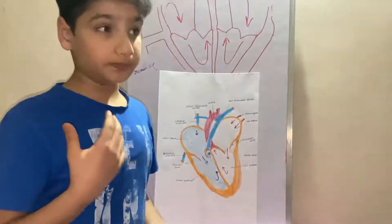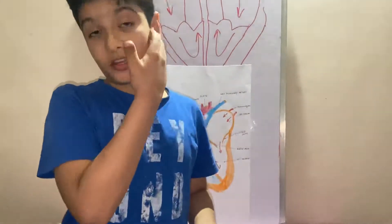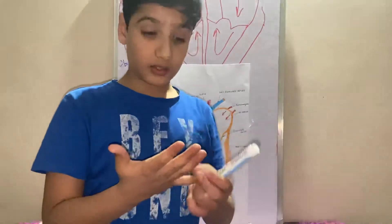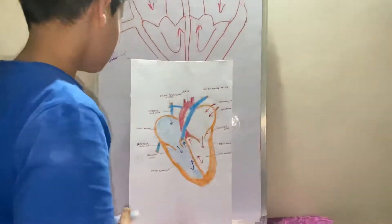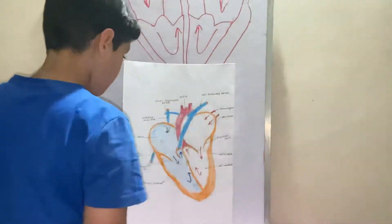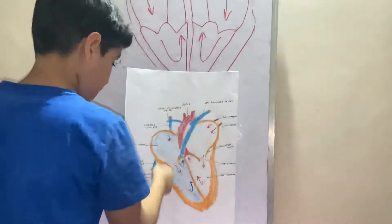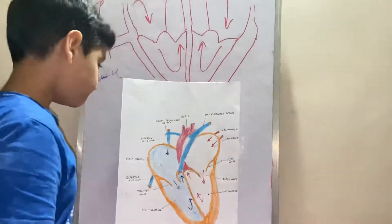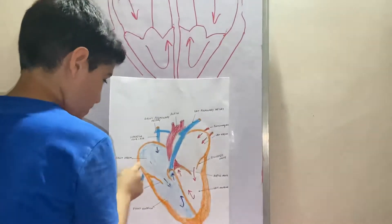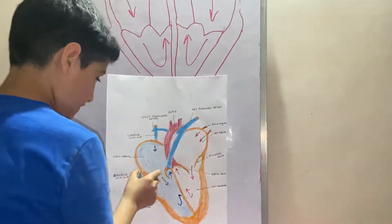The superior vena cava brings the blood from the nose, from the arms, from the fingers, from the brain, from the hair, and so on. So when we collect the deoxygenated, impure blood from the top half of the body, it goes into the right atrium.